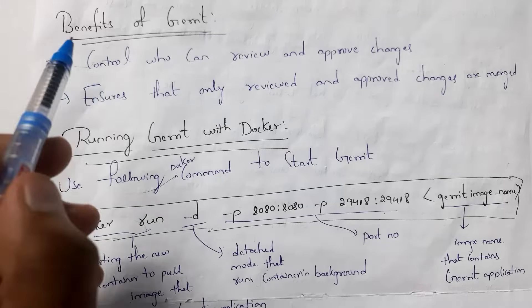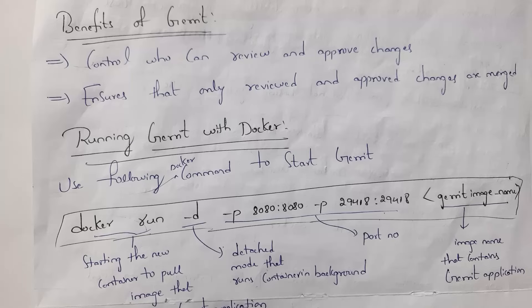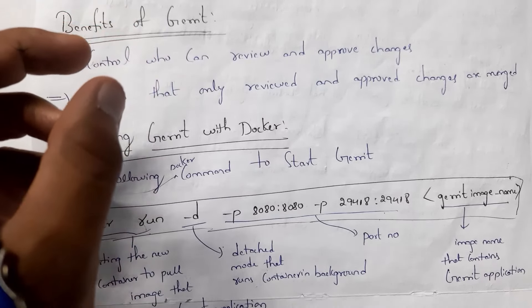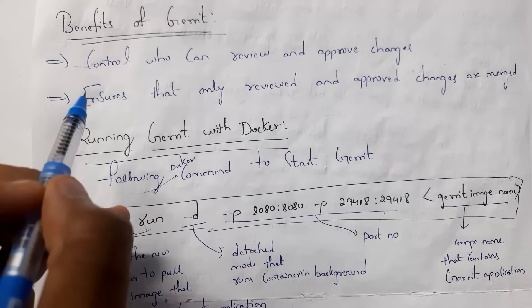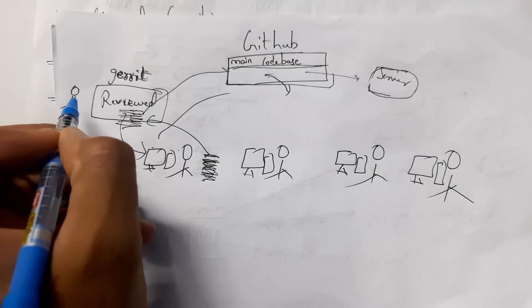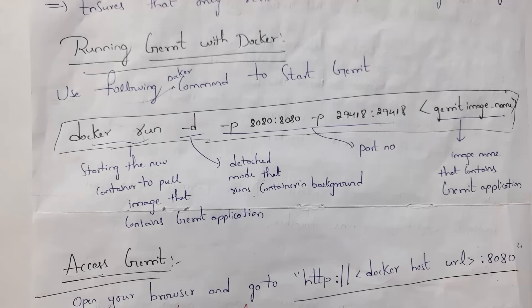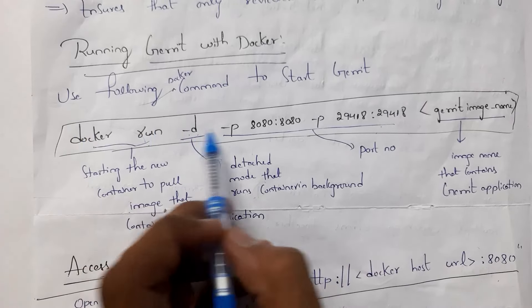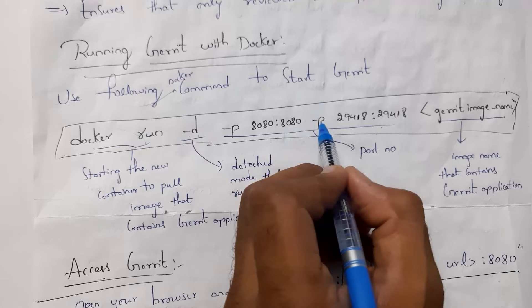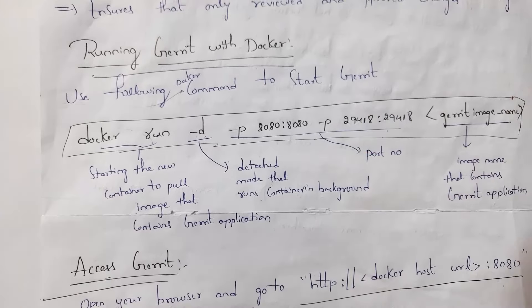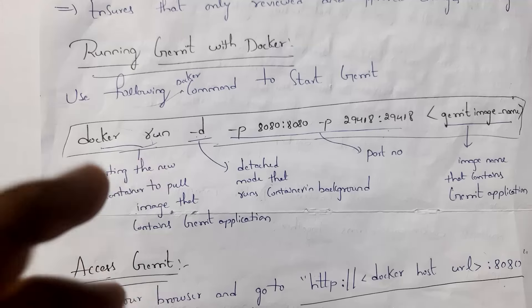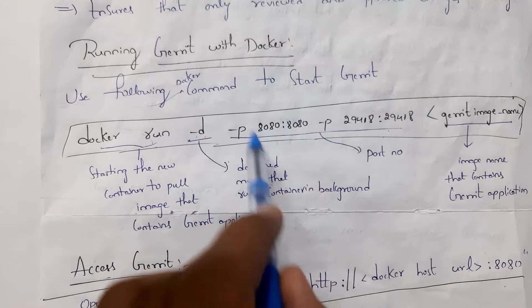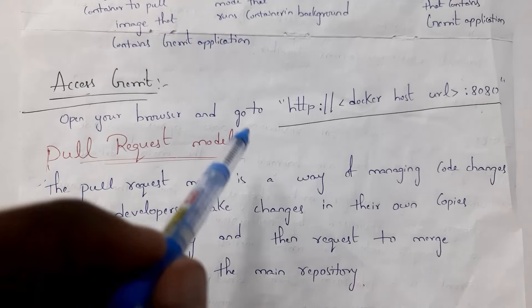The benefits of Gerrit: First, you can control who can review and approve changes. Not every developer will review code — only experienced developers will. By using Gerrit, you can give permissions only to senior developers to review code; remaining employees cannot. The next benefit is ensuring only reviewed and approved changes are merged. Only if a senior developer accepts the code will those changes be placed in the main codebase. We can run Gerrit using Docker software. The Docker command is: docker run -d -p 8080:8080 -p 29418:29418 [image file location]. The -d flag stands for detached mode (runs in background), and -p stands for port number — the port on which our application will run. To access Gerrit, open any web browser and go to the corresponding URL.